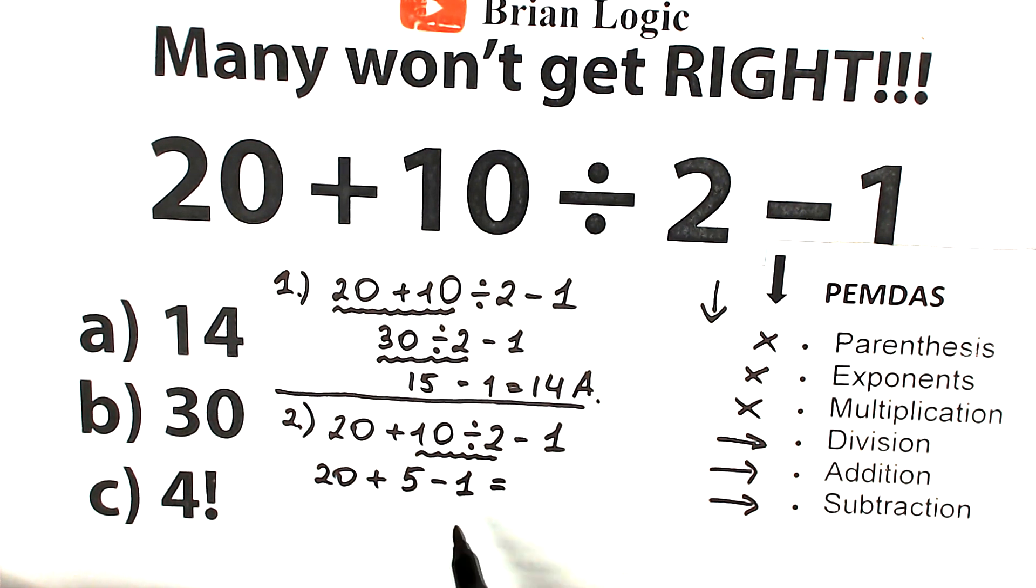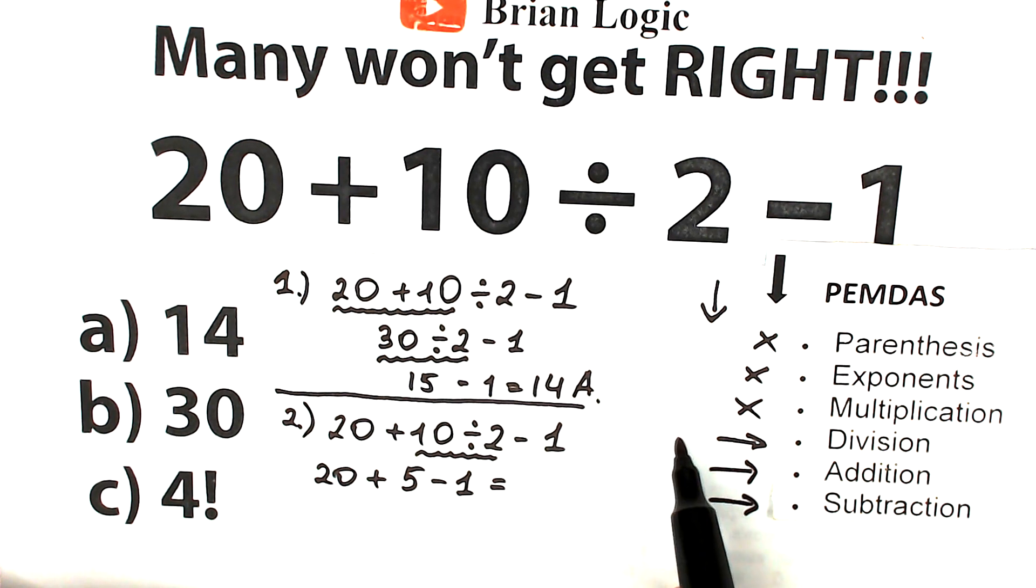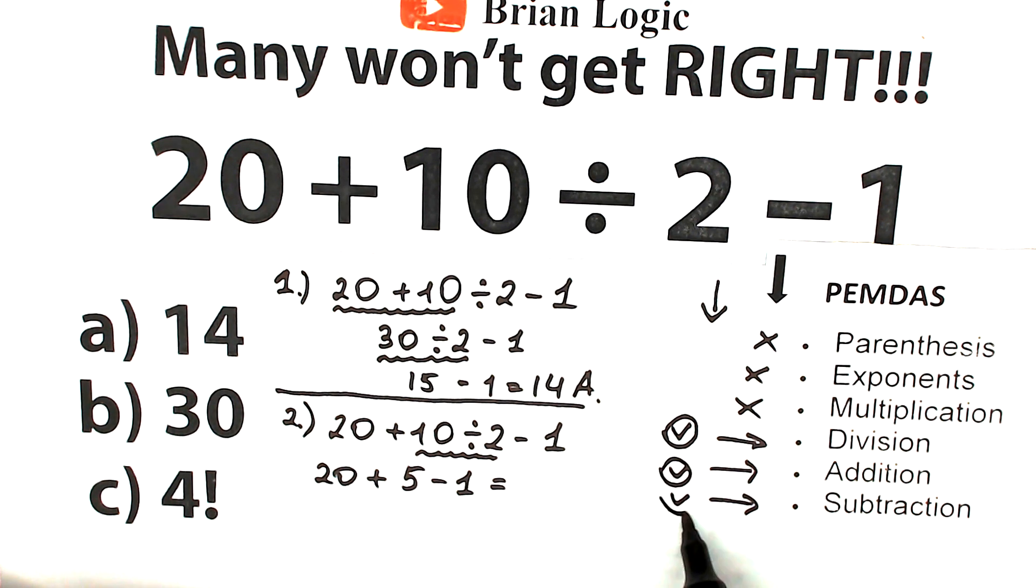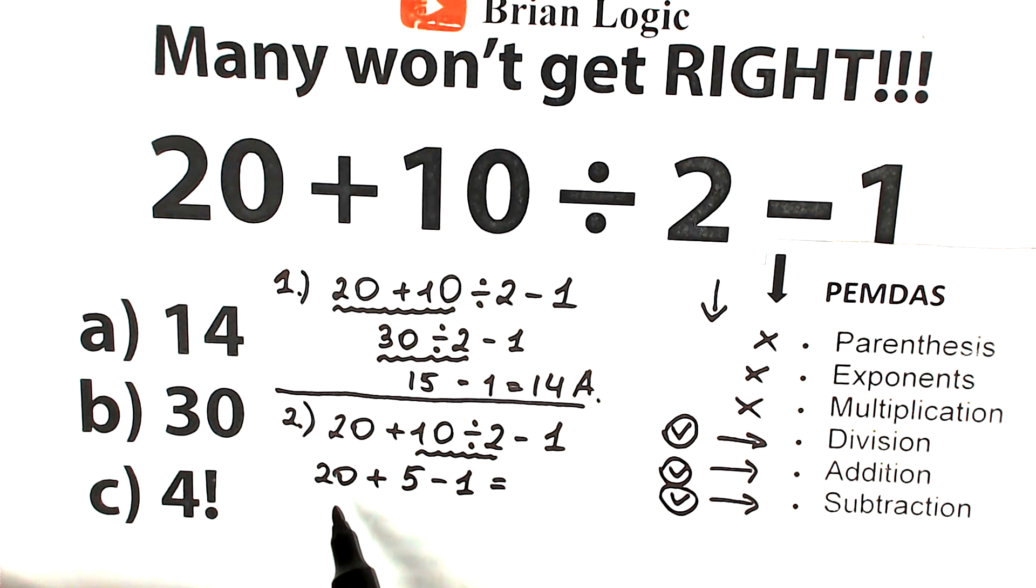Right now you don't need your order of operations because this is very basic addition subtraction group. We can complete this division group and easily complete this addition subtraction group. Everyone knows about addition subtraction, so we have 25 minus 1 which gives us 24.